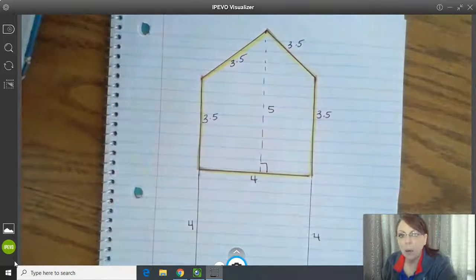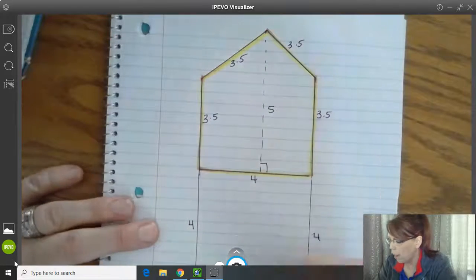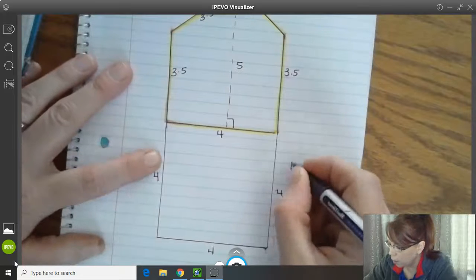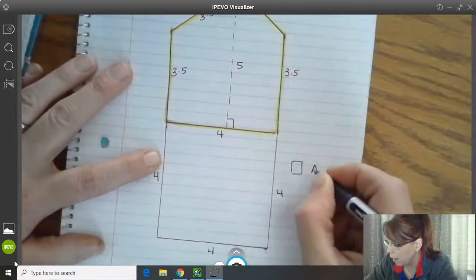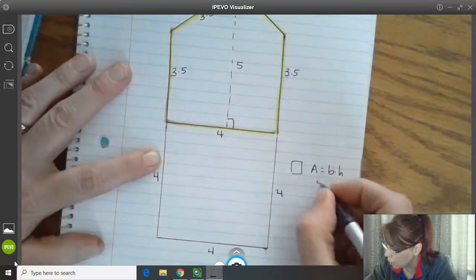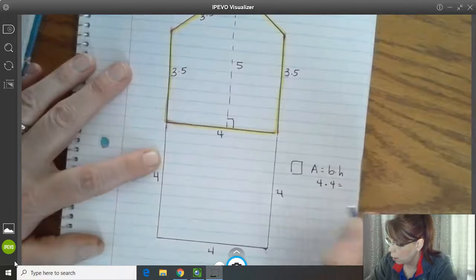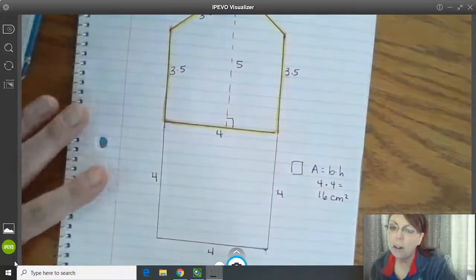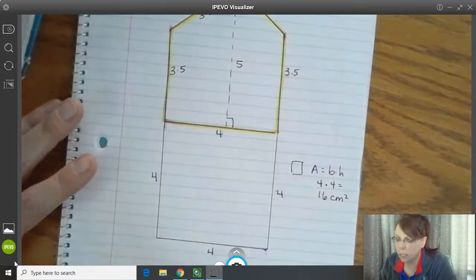All right, so how am I going to solve for the area? Well, I can do this square down here really easy. Squares, to find the area, it's base times height or length times width. So it's 4 times 4, which equals 16. The unit of measurement was centimeters. So 16 centimeters squared.